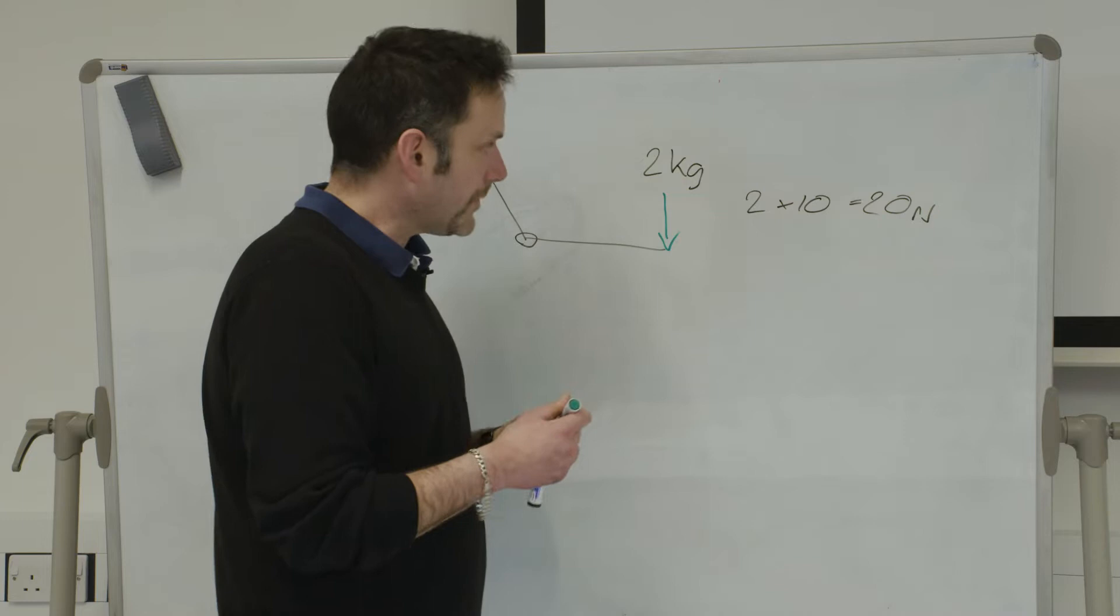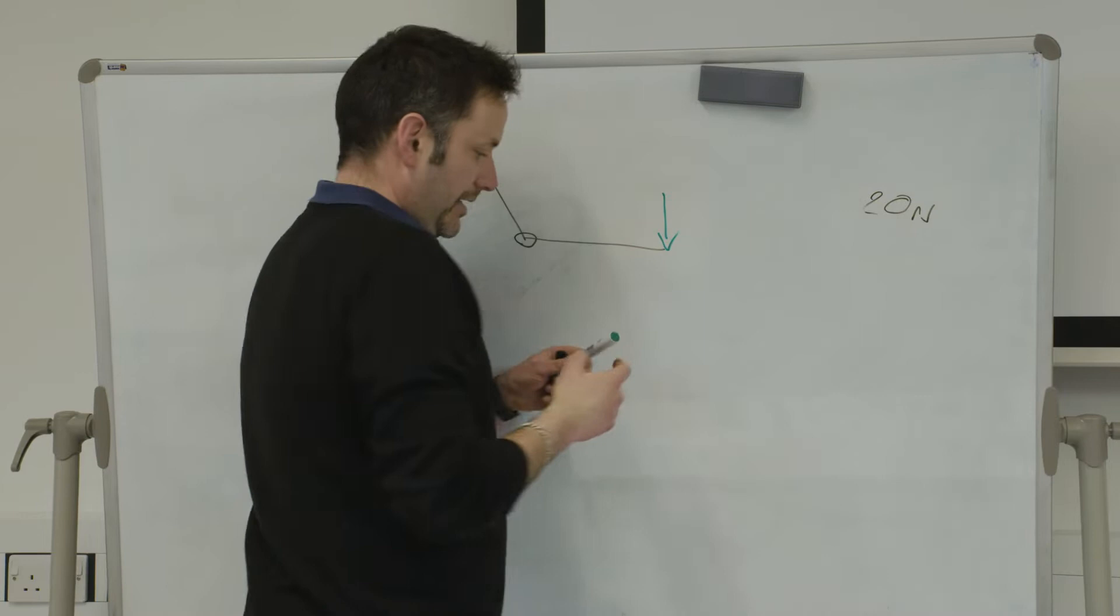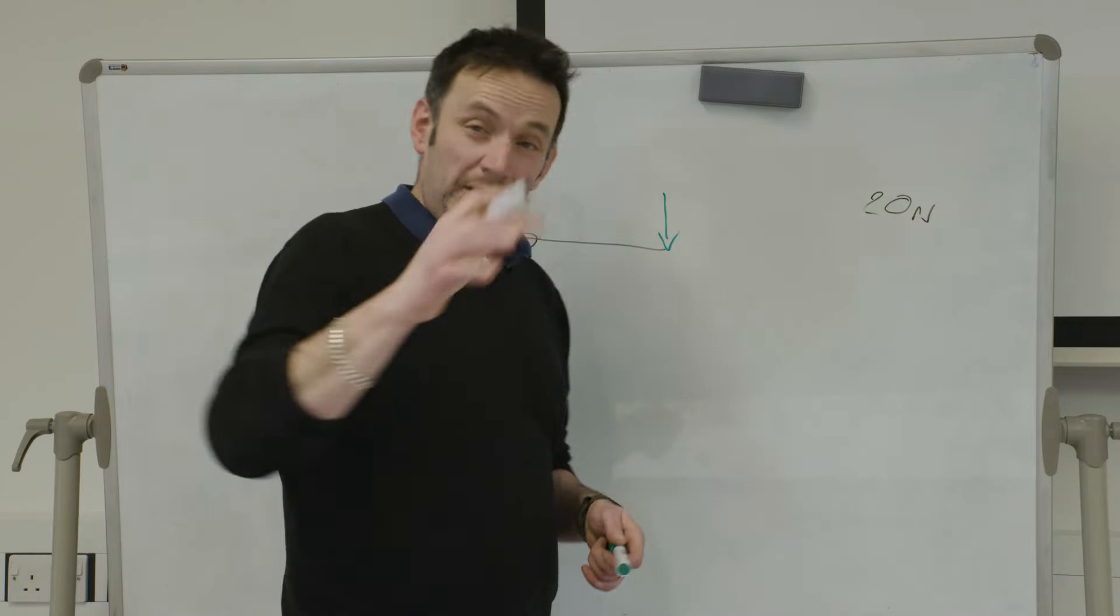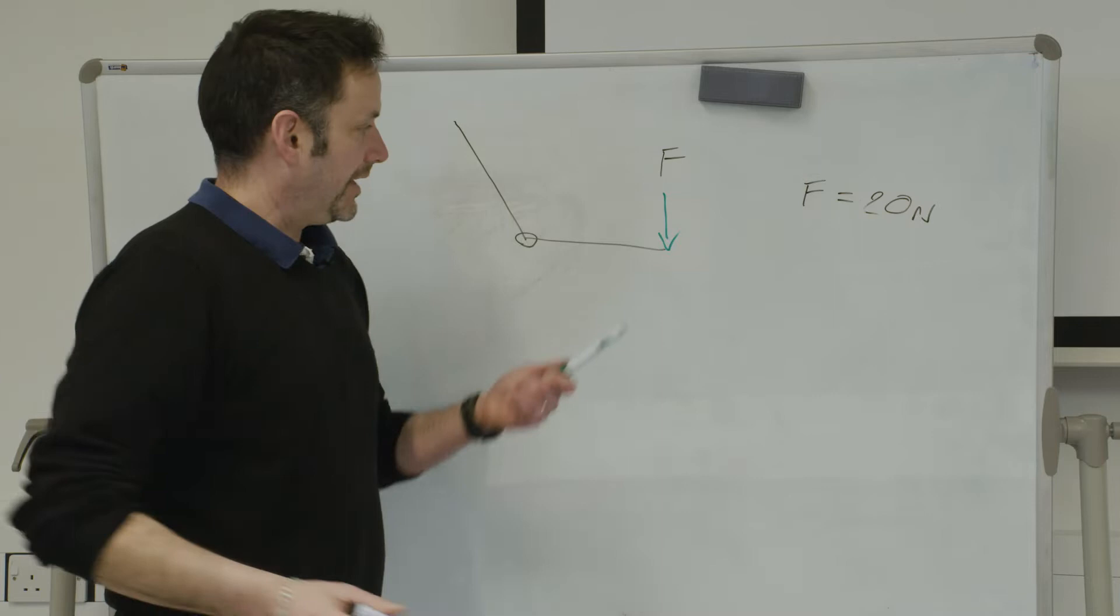Now we call it newtons after the famous physicist Isaac Newton who proposed how force is calculated. So we now know. I've converted my 20 kilos to 20 newtons. Now when we call it 20 newtons we actually refer to this as force. And I know I've probably just said this but if I say F is equal to 20. Now this gets very good. So we've now got a value for our force. So let me just put that arrow in. I've got F acting down.